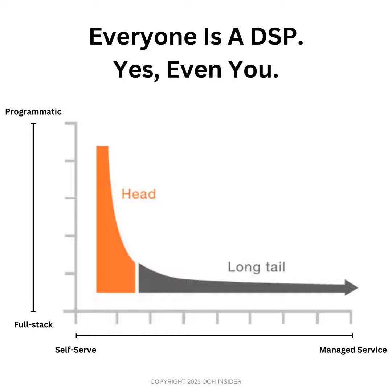For out-of-home and more specifically programmatic digital out-of-home, there are platforms like Vistar or Outmove. These platforms are designed to be self-serve, exclusively for programmatic trading. There are very clearly self-serve DSPs — something I think we can all agree on — that are designed for programmatic trading.